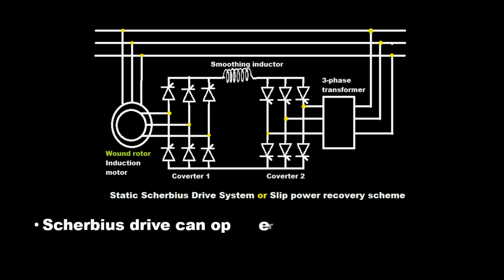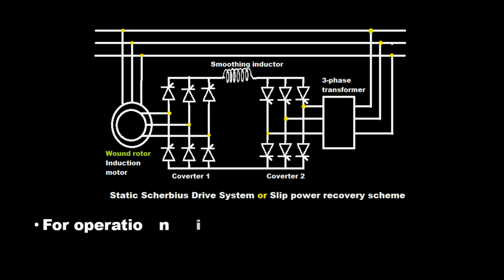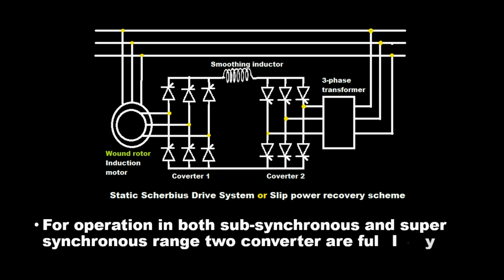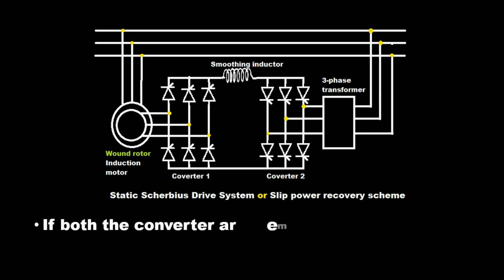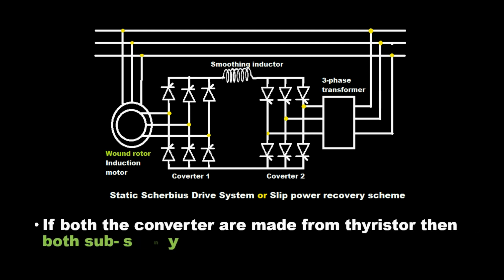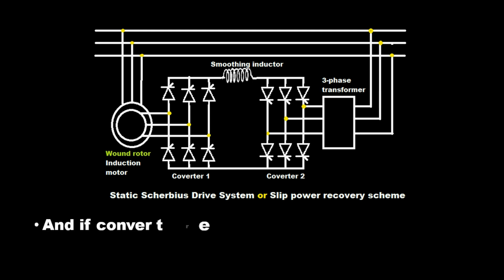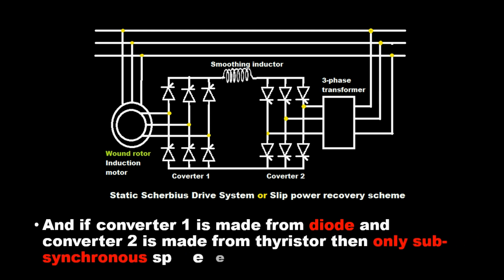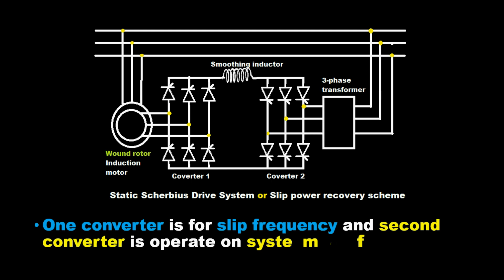The Scarbius Drive can operate in both sub-synchronous and super-synchronous speed ranges. For operation in both ranges, two fully controlled thyristor bridges are used. If both converters are made from thyristors, both sub-synchronous and super-synchronous speed ranges are obtained. If converter 1 is made from a diode and converter 2 from a thyristor, then only sub-synchronous speed control is obtained. One converter operates at slip frequency and the second at system frequency.